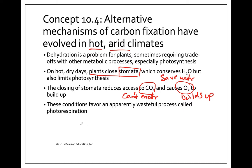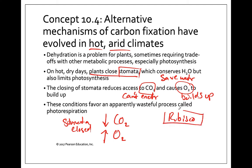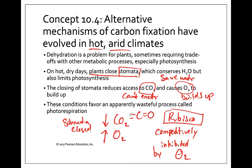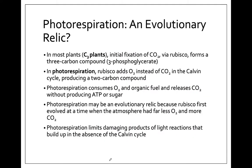If the stomata are closed, we're going to see a decrease in CO2 inside the leaf and an increase in O2. This is a problem because Rubisco, the enzyme that fixes carbon dioxide, is a really old enzyme that probably developed before there were high levels of oxygen in the atmosphere. So Rubisco is competitively inhibited by oxygen. Oxygen and CO2 have a similar structure, so Rubisco's binding site can accept oxygen instead of CO2, which leads to a process called photorespiration.